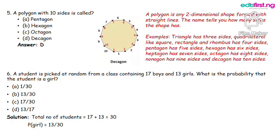Question 6: A student is picked at random from a class containing 17 boys and 13 girls. What is the probability that the student is a girl? Solution: Total number of students equals 17 plus 13 equals 30. The probability of the student being a girl equals 13 all over 30.